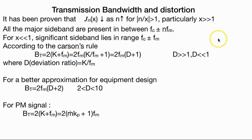Most of the time, first look for the deviation. If the deviation is greater than 1 or less than 1 and doesn't lie in the range of 2 to 10, then the bandwidth is 2Fm(D plus 1). Deviation ratio is K by Fm, where K is frequency deviation.